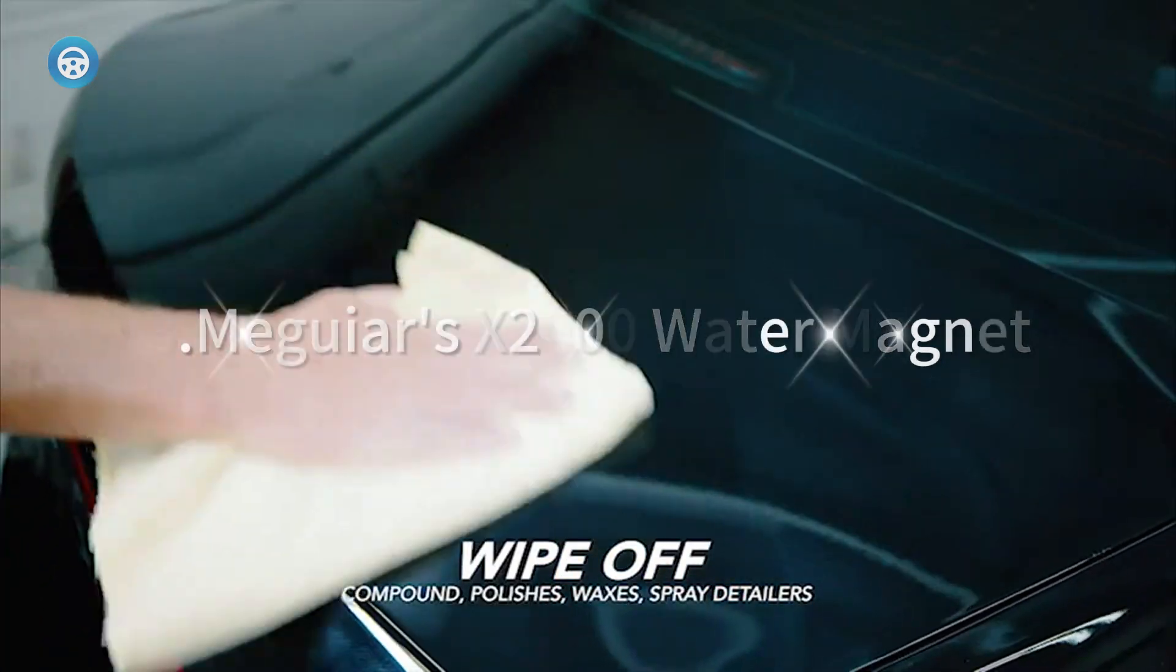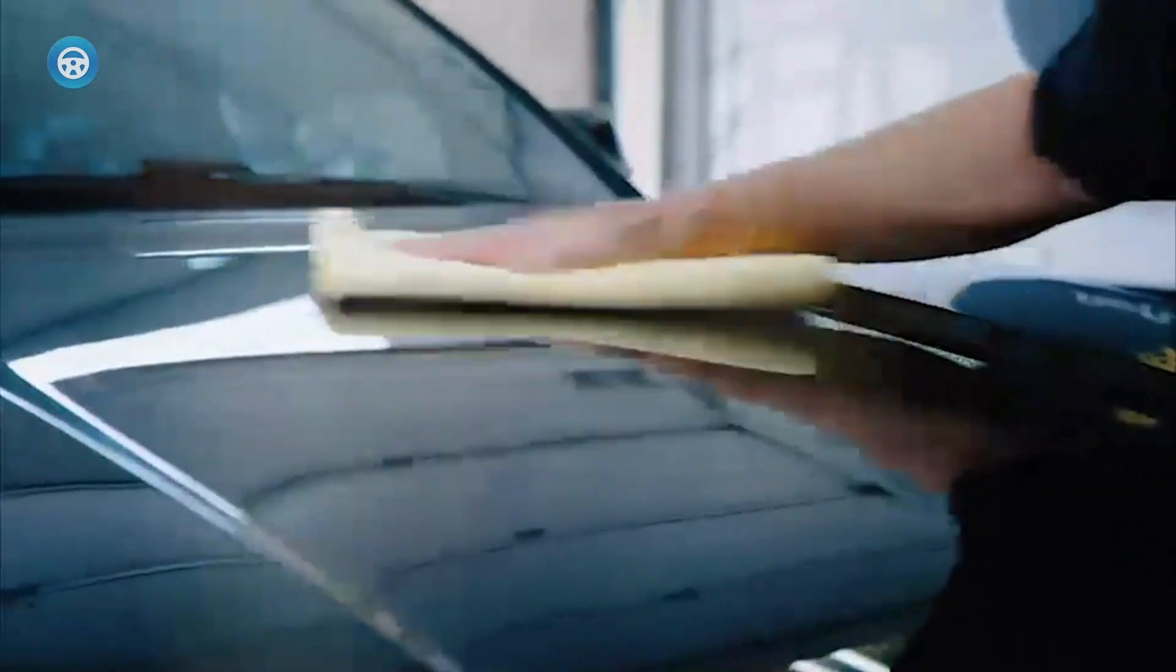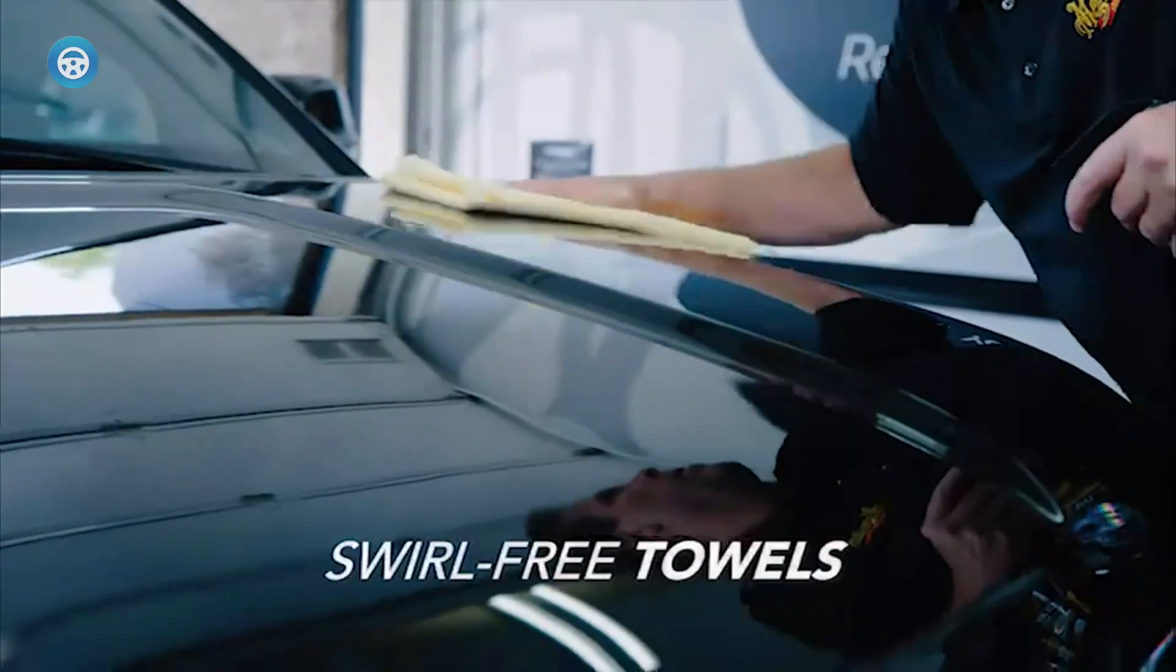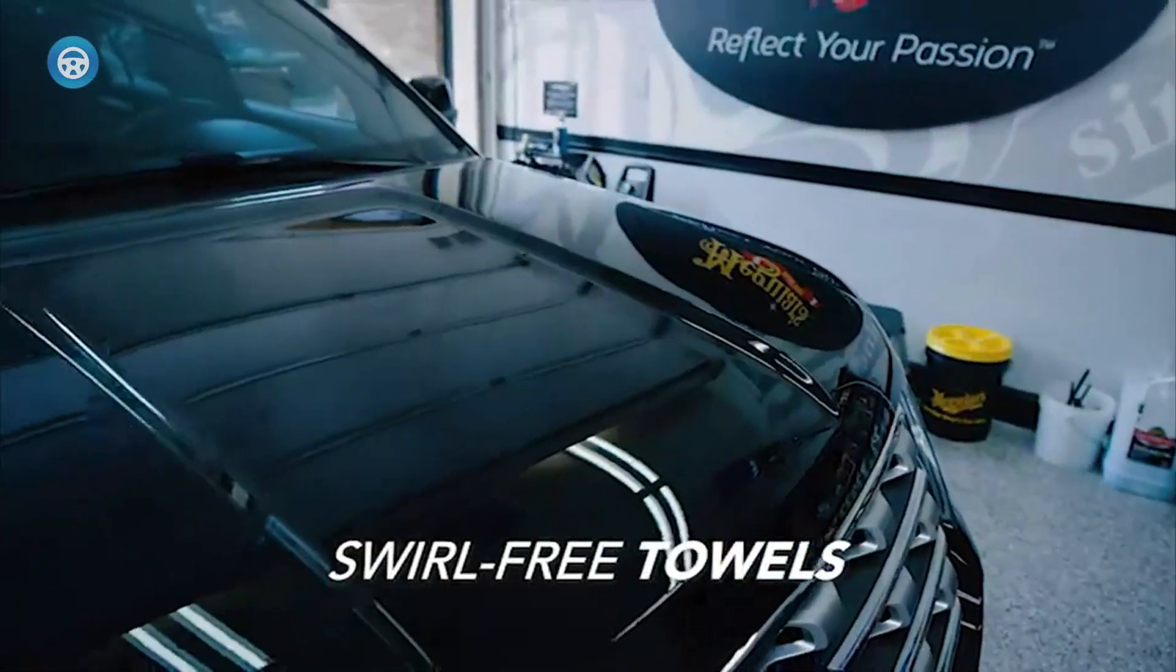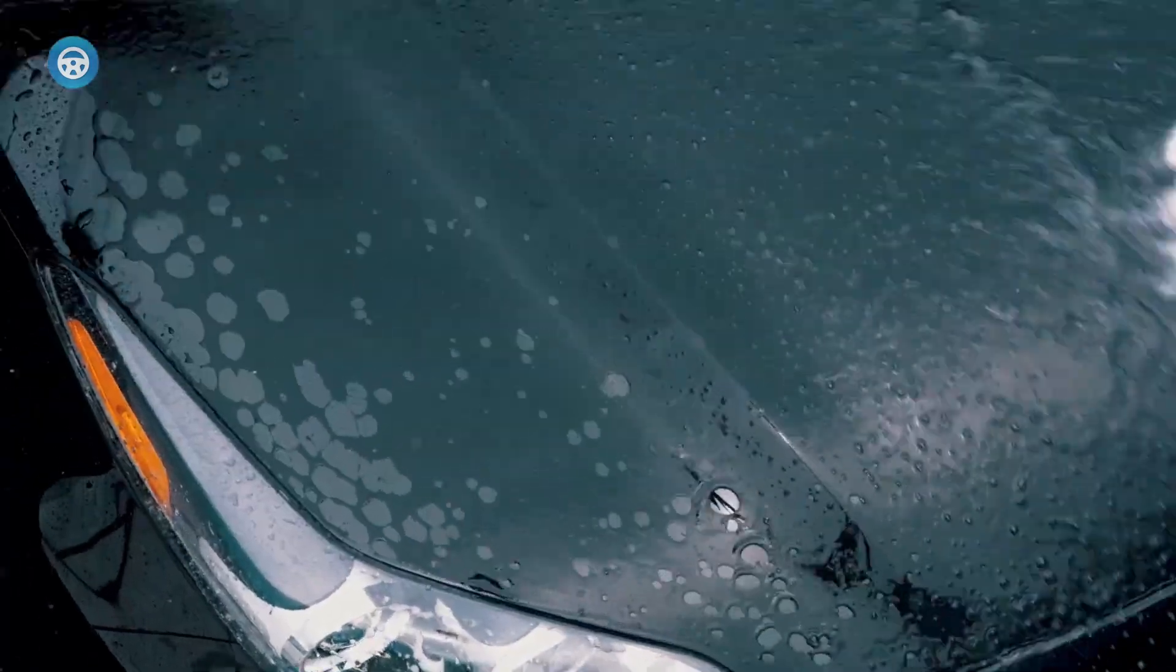Meguiar's X2000 Water Magnet: It's a traditional microfiber towel but it works like magic to leave your car's surface super dry after washing. What's also great about standard car drying towels is that you can machine wash them in liquid detergent to rid them of dirt and debris every so often.